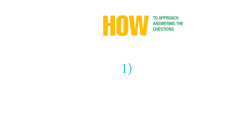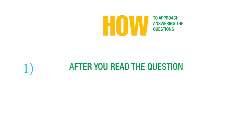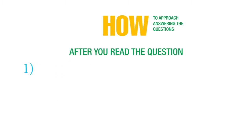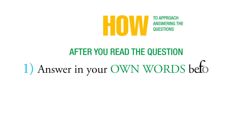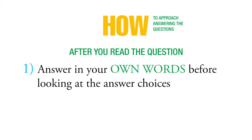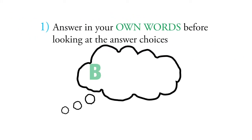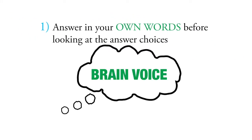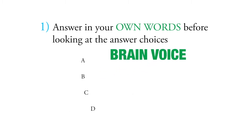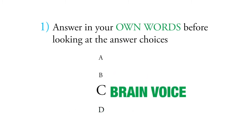The first group of questions is the kind where, after you read the question, you can answer it in your own words before you look at the answer choices. Once you have answered using your brain voice, then you find the choice that matches your version of the answer.